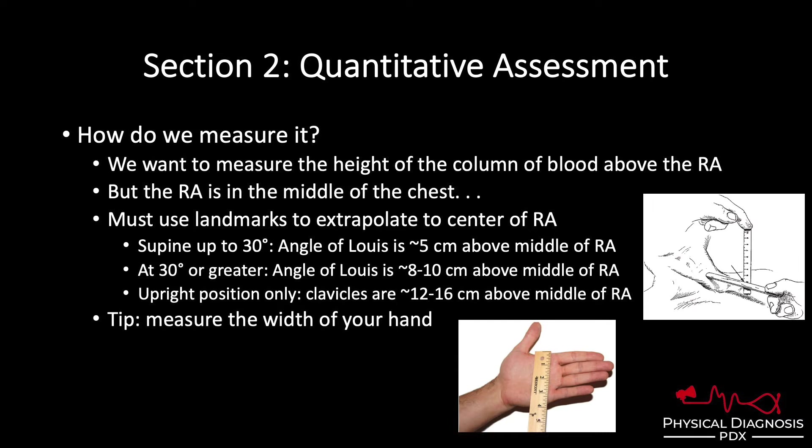I'll use my eyes and visualize where that meniscus is. If the top of it is near the top of my hand and the patient is supine where the angle of Louis is five centimeters to the right atrium, my hand is eight, so that's 8 plus 5 equals 13 centimeters of water. If it's half of my hand, that's 4 plus 5 equals 9 centimeters of water. If it goes above the top of my hand, I'll add a second hand — a hand and a half — so for me that's 12 plus 5 equals 17 centimeters of water. And this is how we calculate the JVP at the bedside.